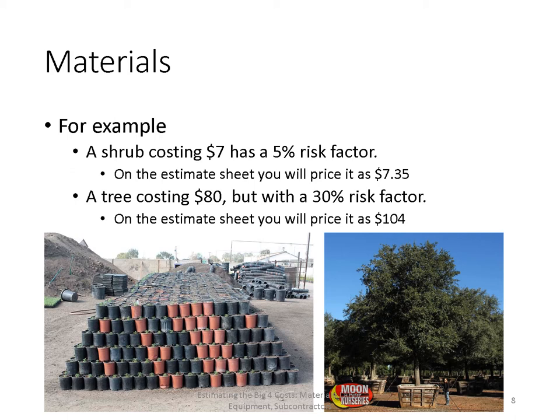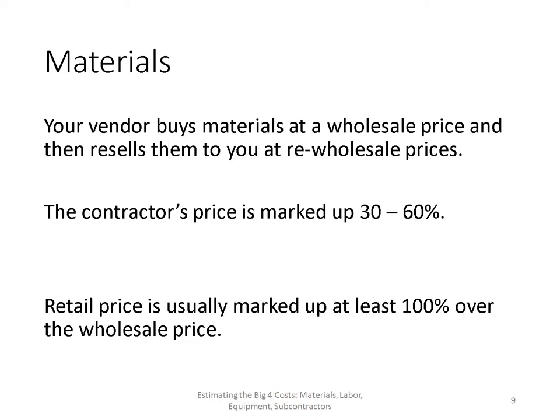Looking at images: you can see a large oak tree boxed up in what appears to be a six- to eight-foot box, and on the left, one-gallon plants stacked in a pyramid — likely for a restoration project. Any material you buy, you're typically buying from a wholesale vendor who buys it themselves. So you're often buying from distributors like Ewing, Site One, or Hydrascape, or wholesale nurseries. Those vendors buy at their wholesale price and resell to you at a re-wholesale price — typically 30 to 60% more than what the vendor paid.